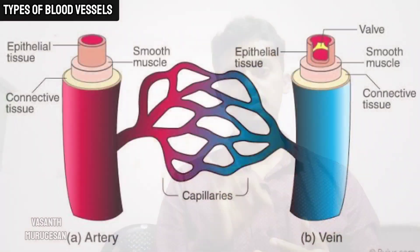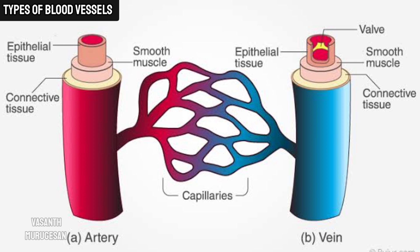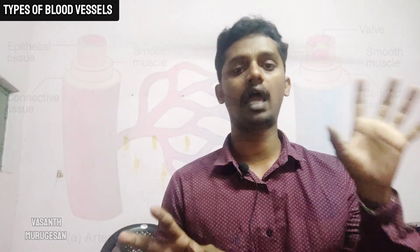Blood vessels are three types: arteries, veins, and capillaries.